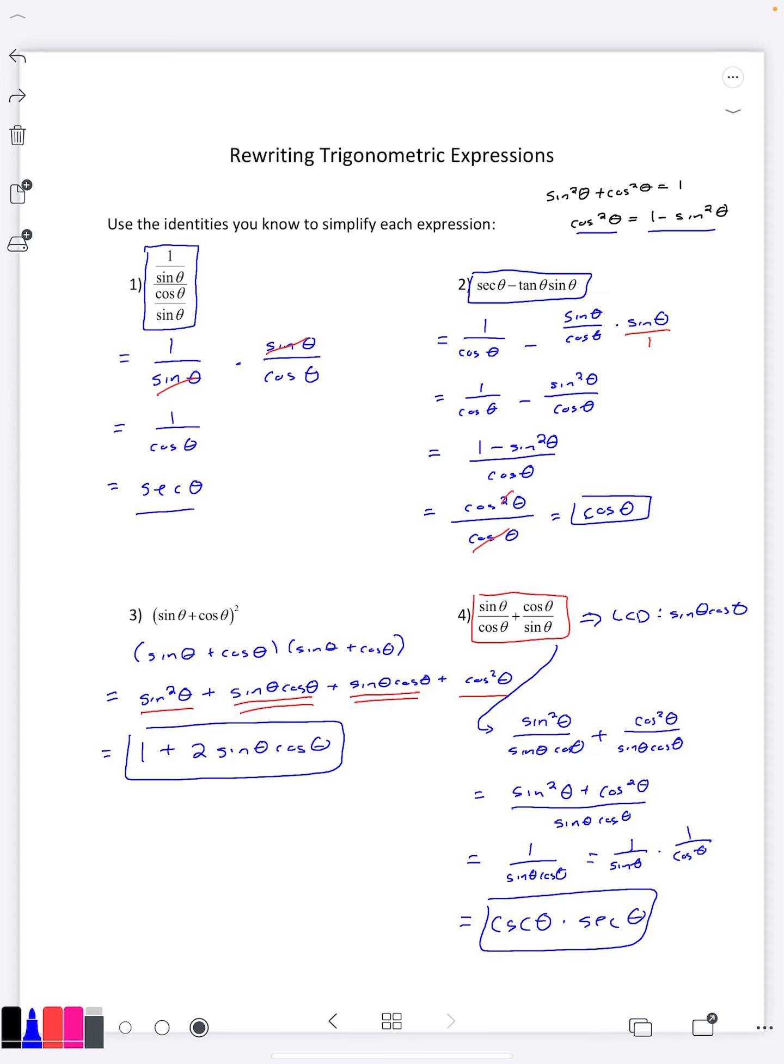So again, you play around and do whatever you can to try to combine them together. You do have to use algebra rules like common denominators and multiply by reciprocals and foiling out. All those things are going to come into play, but now you're doing it with trigonometric functions.